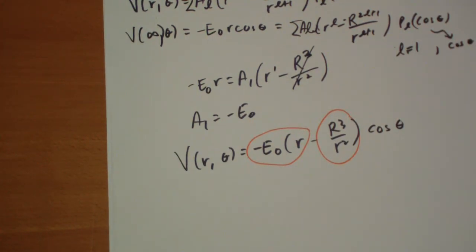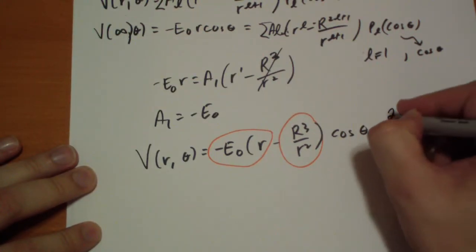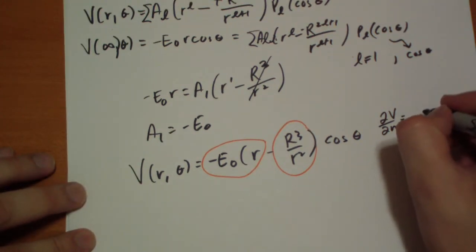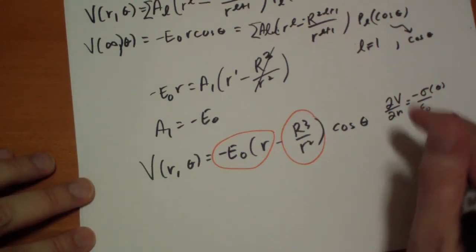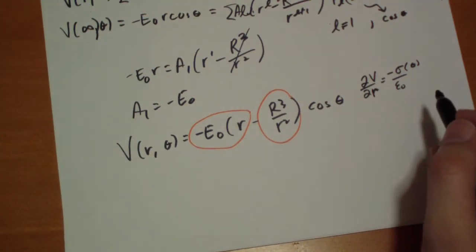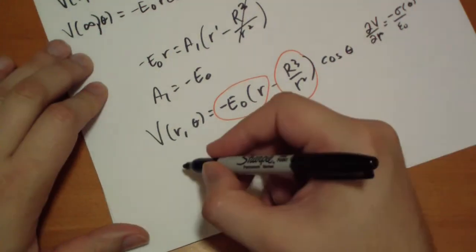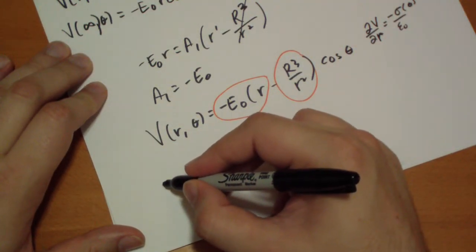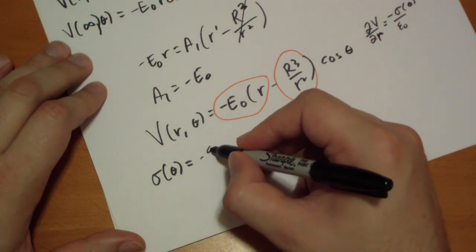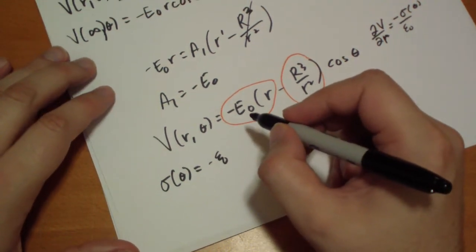We can calculate the induced surface charge using the simple formula. The normal is equal to the surface charge over epsilon naught, negative of the surface charge which depends on theta. And this is actually R because R is always perpendicular to the sphere because we centered it on the origin. dV by dR is of this guy.